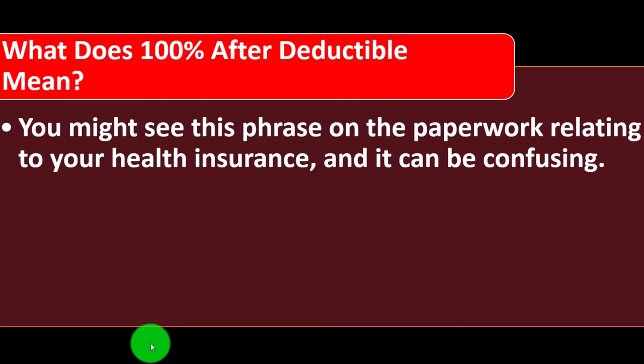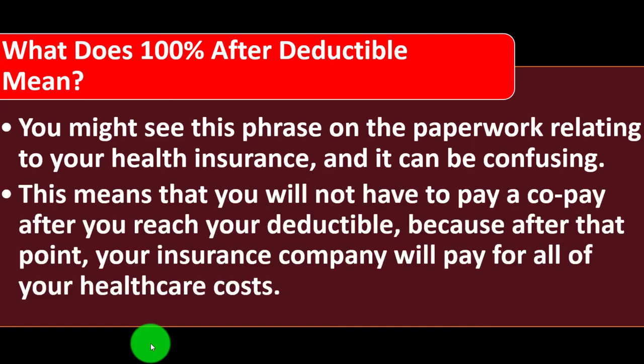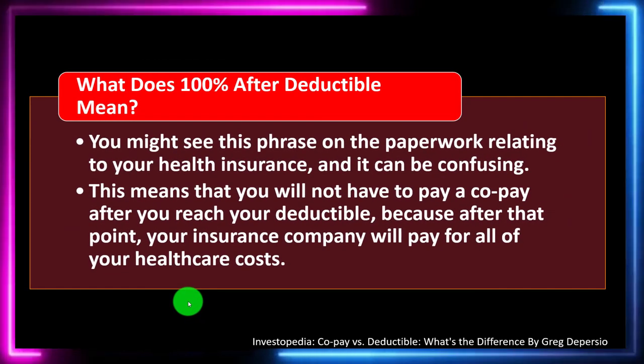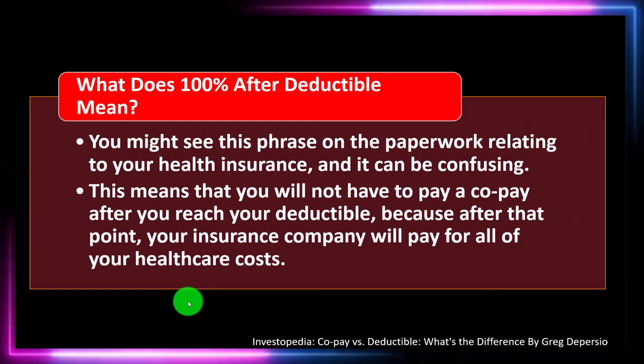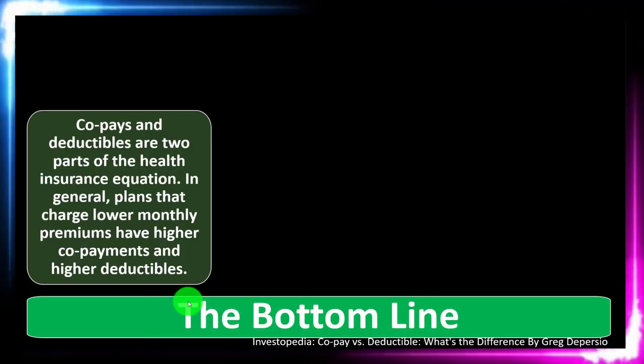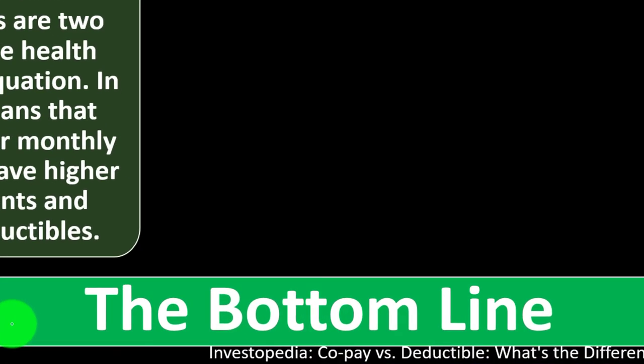What does '100% after deductible' mean? You might see this phrase on paperwork relating to your health insurance and it can be confusing. This means that you will not have to pay a co-pay after you reach your deductible, because after that point your insurance company will pay for all of the healthcare costs.